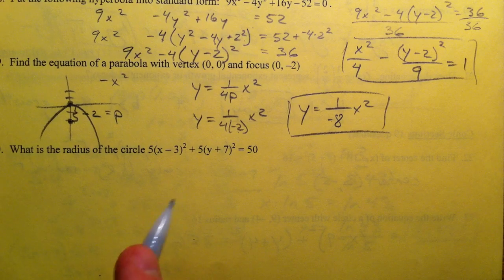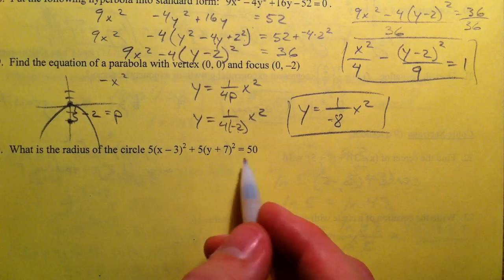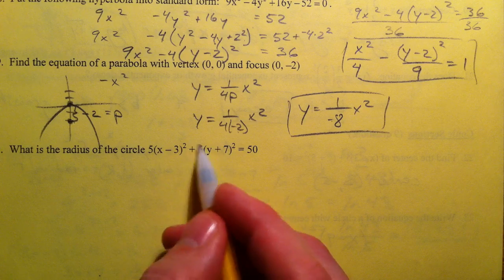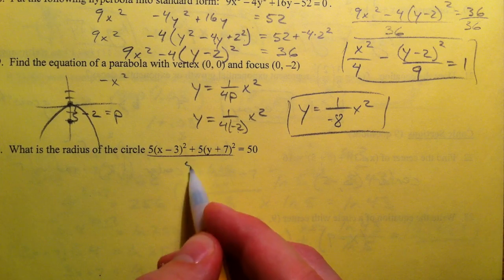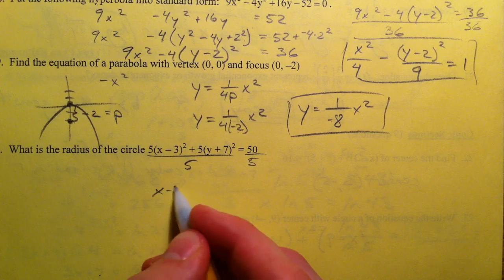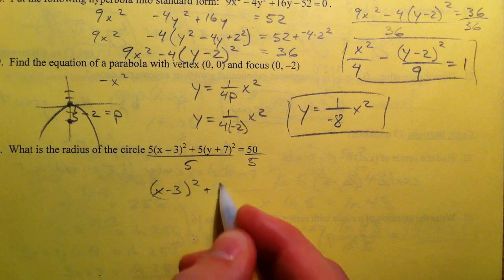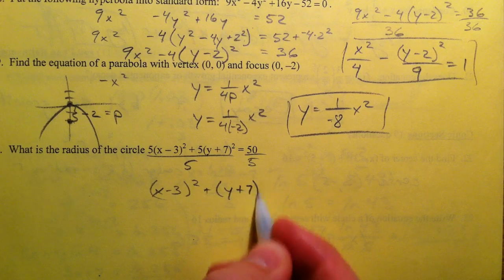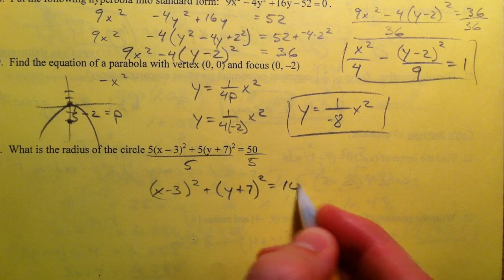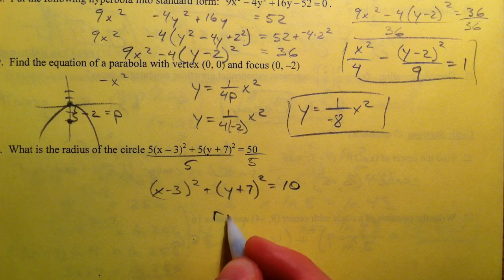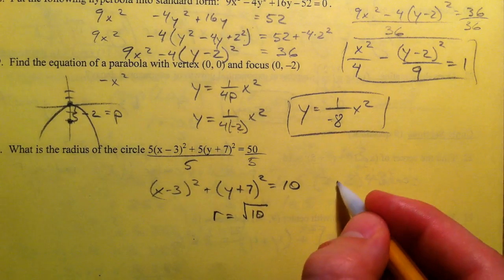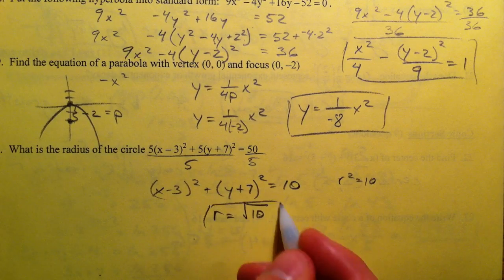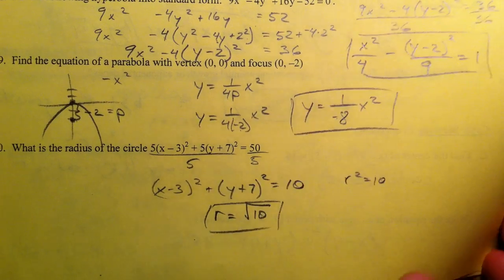Next one, what's the radius of our circle. Well right now it's not in proper form because these 5's are here so we can't tell what the r squared is so we have to divide by the 5 to get x minus 3 squared plus y plus 7 squared equals 10 and so the radius of this one is the square root of 10 because r squared equals 10. And that's conic sections.